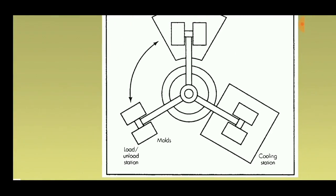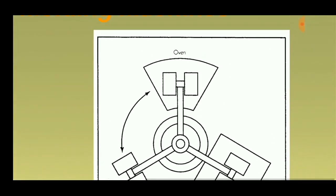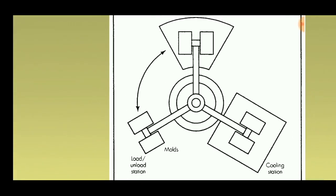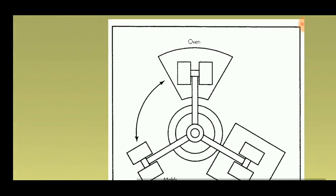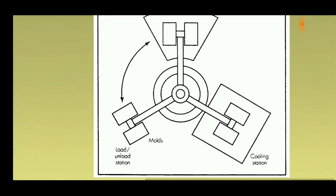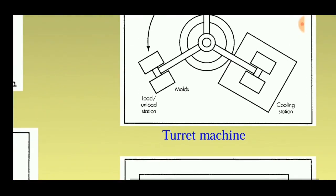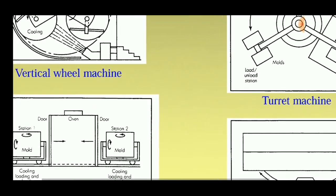The second method is the turret machine. The turret machine also contains three stations: a load/unload station, an oven, and a cooling station. The plastic material is deposited on the mold at the load station, then it goes to the oven where the plastic melts and forms a coating over the inner surface, and finally it goes to the cooling station where the plastic is cooled and then taken from the mold.